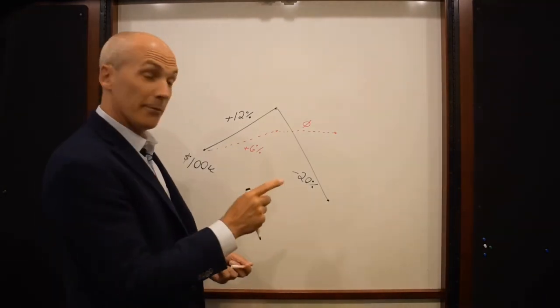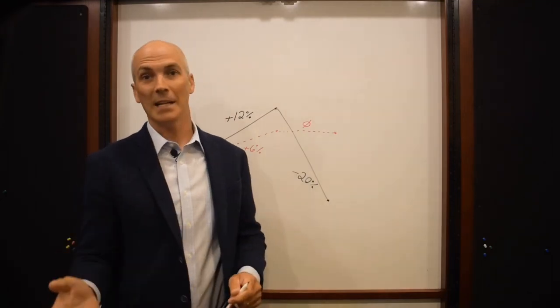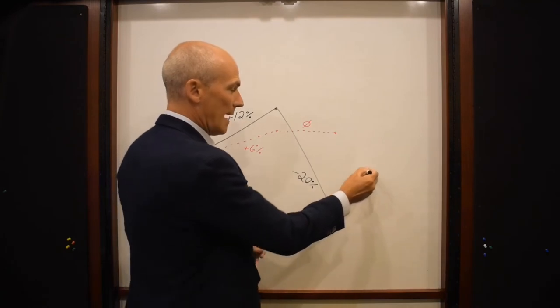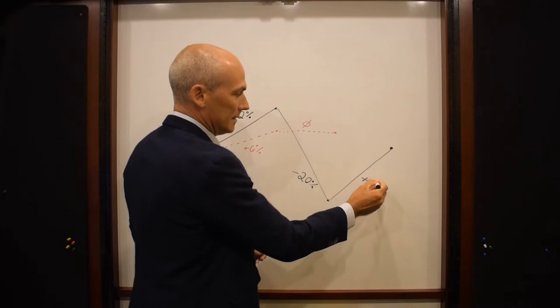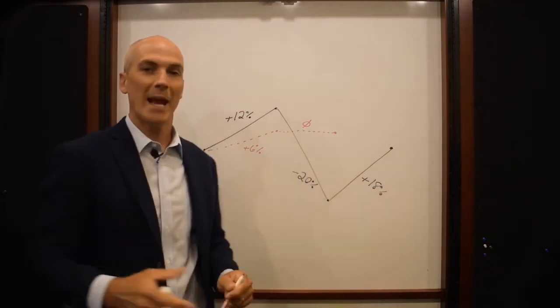So we're going to carry it forward one more year. And typically what happens after a decline in the market is a recovery at some point. So we're going to say in that third year, after that 20% decline, the market rallies back, we'll say 18%. Not all 20, but it comes back 18.